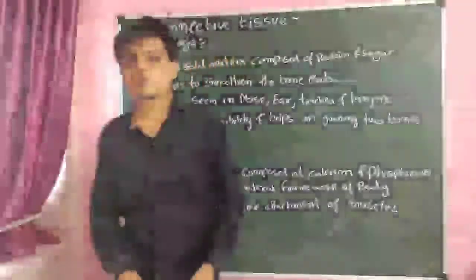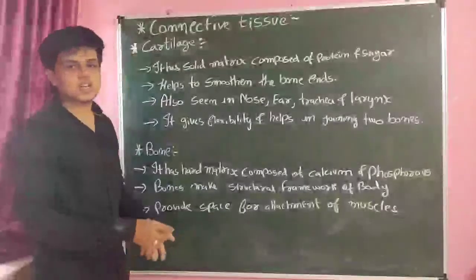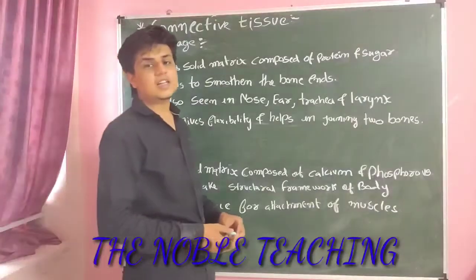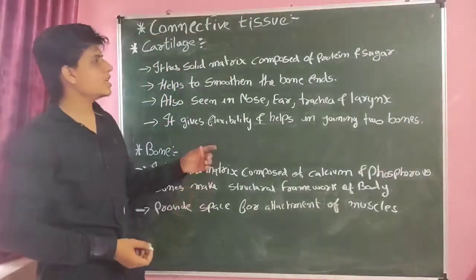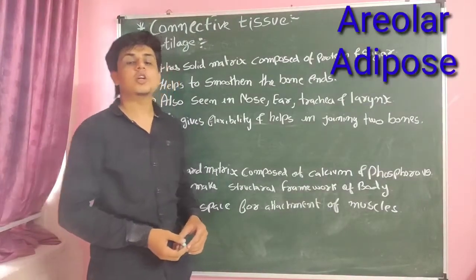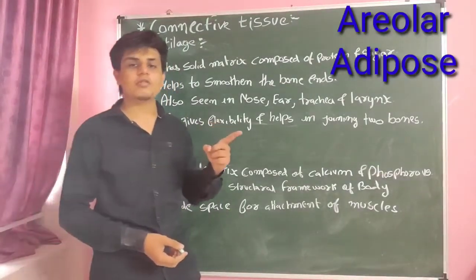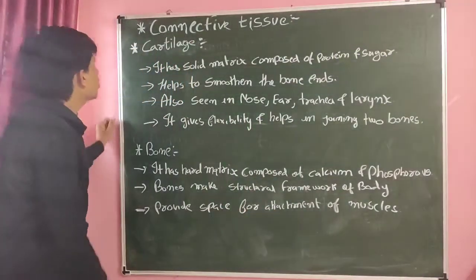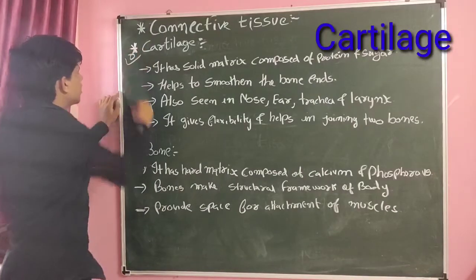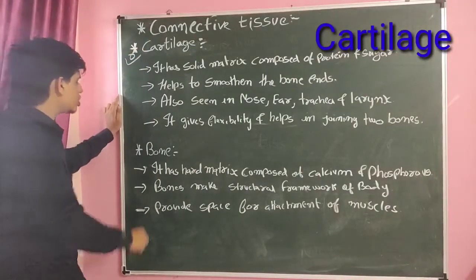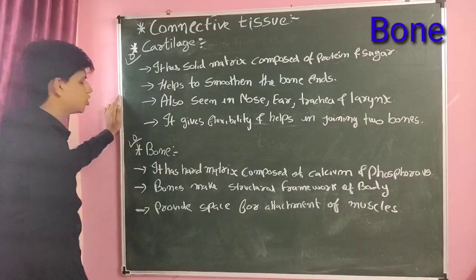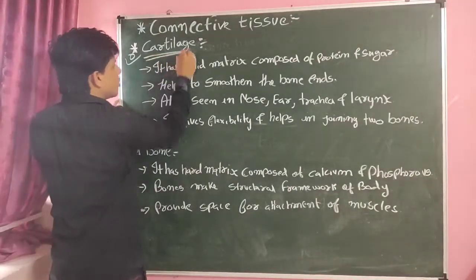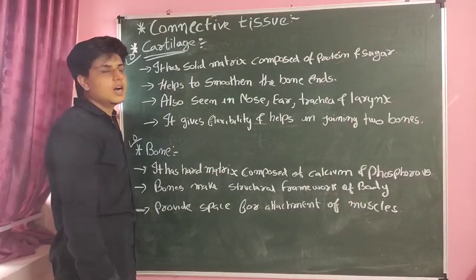Hello friends, welcome back to my YouTube channel, The Mobile Teaching. As you all know, we are going through Chapter 6 of Class 9, that is known as Tissues. We have completed the first two types of connective tissue: areolar connective tissue and adipose connective tissue. In this video, we are going to study the third type of connective tissue, known as cartilage, and the fourth type, known as bone. Let's start with cartilage.